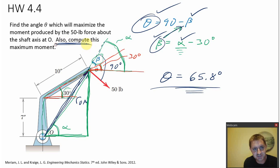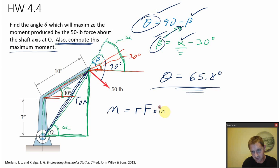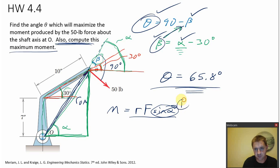Don't forget to read the problem statement fully. The problem also says to compute what is this maximum moment. The moment is maximized when R is perpendicular to F, so the maximum moment is R times F times the sine of alpha — and since sine of alpha equals 1, I just need to find R and F.